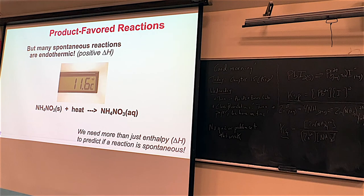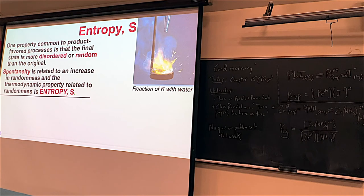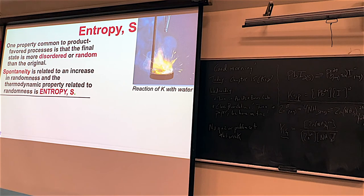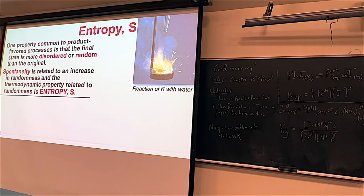Entropy and enthalpy are kind of a yin-yang thing, like the acid-base yin-yang we saw before. Entropy gets the symbol S — while enthalpy is H, entropy is S. Entropy is described as a measure of disorder. The more disordered or random the final state is relative to the initial state, the higher the entropy. Spontaneity — whether a reaction is going to occur — is related to this randomness and messiness.